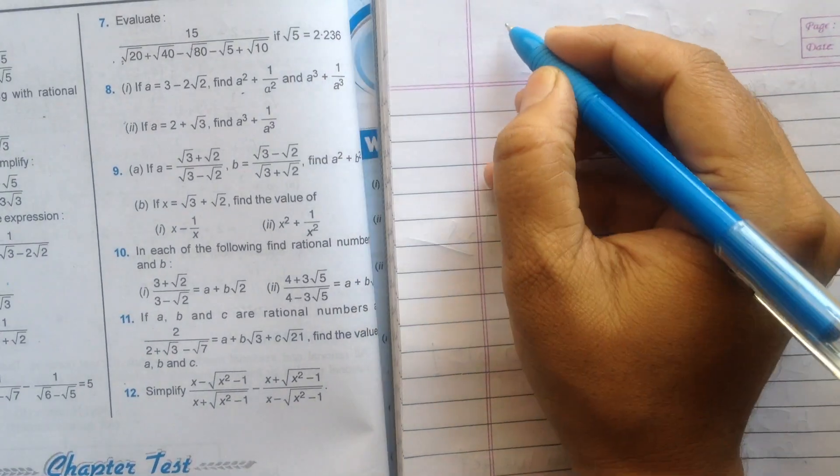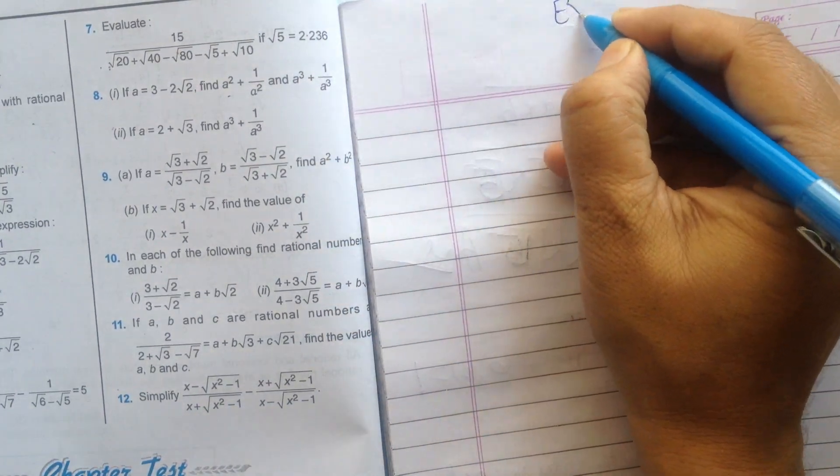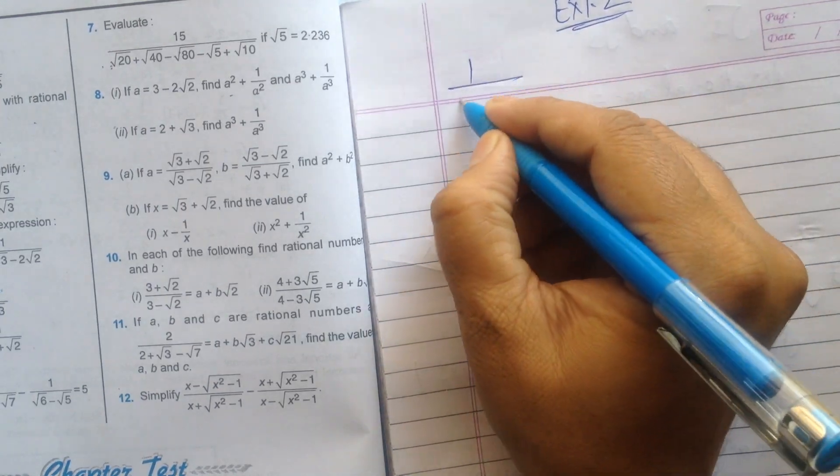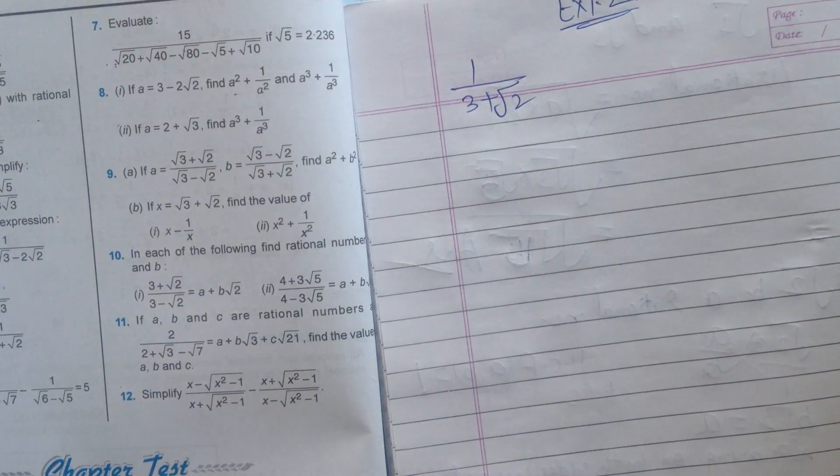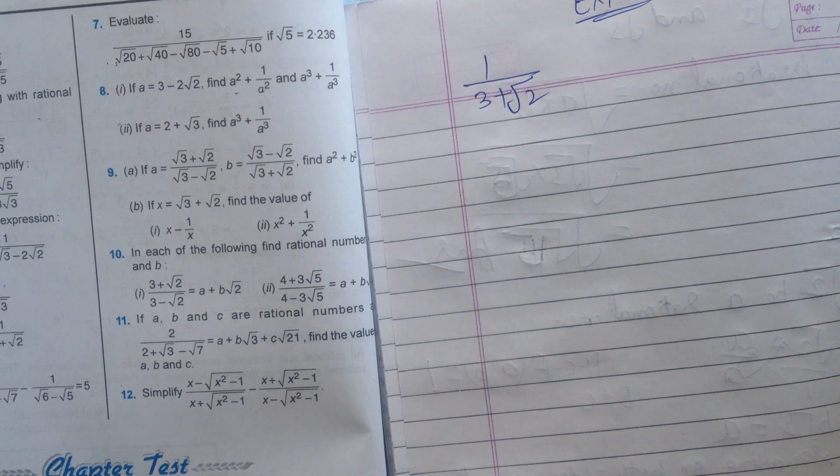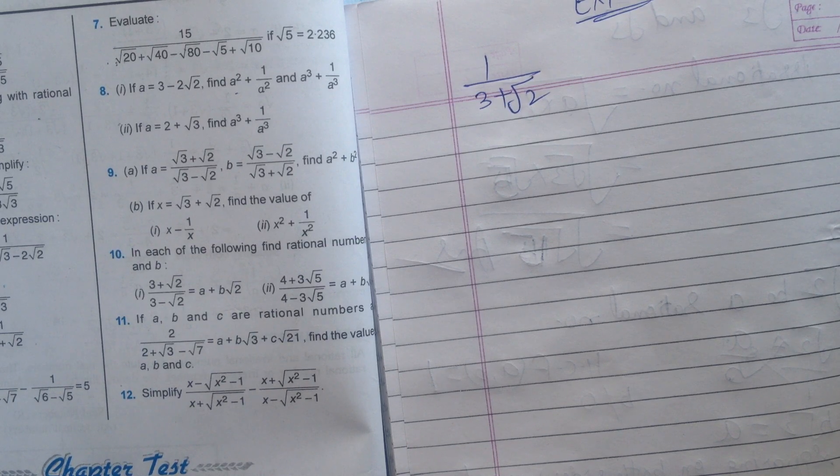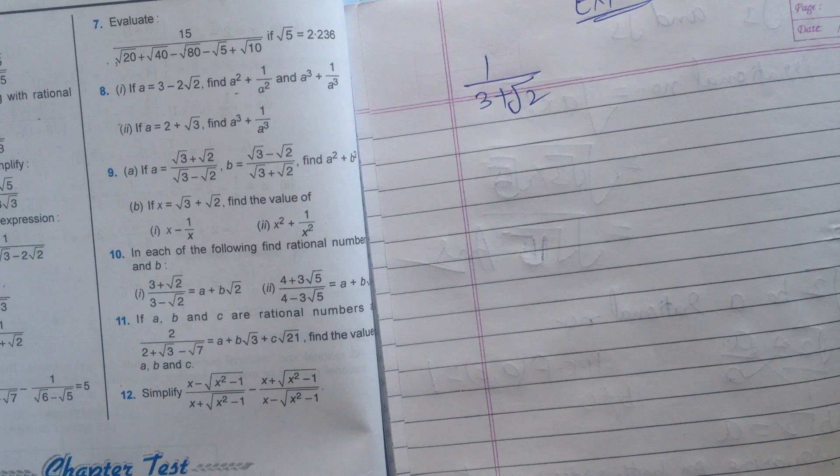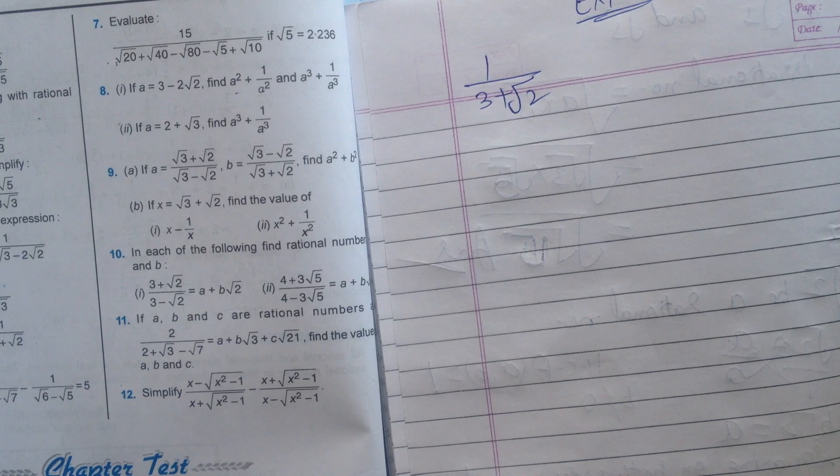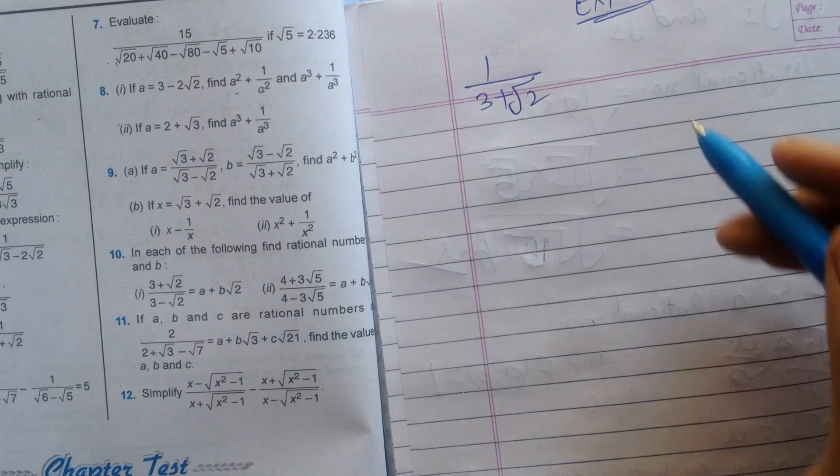Suppose we have one question: 1 upon 3 plus root 2. As I already explained to you, the method of rationalization is used to remove the surd from the denominator. If there is any surd in the denominator, a surd means when the exponent of any number, of any whole number, is not a whole number but is in a fraction, then we will say it is a surd.